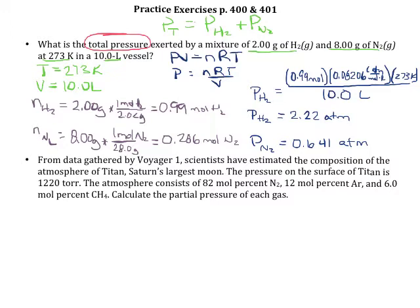Since we know the total pressure is the sum of the partial pressures, we add 2.22 atmospheres and 0.641 atmospheres together. Rounding to three significant figures — following our decimal places, that's to the tenths place — we get a P_total of 2.86 atmospheres.